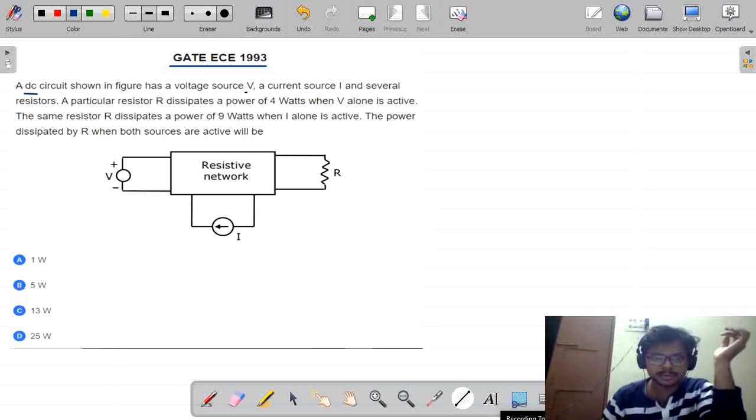It has a voltage source V and current source I. It is clearly mentioned in the diagram - voltage source V and current source I. And several resistors. Where are the resistors? Resistors are packed in the resistive network.